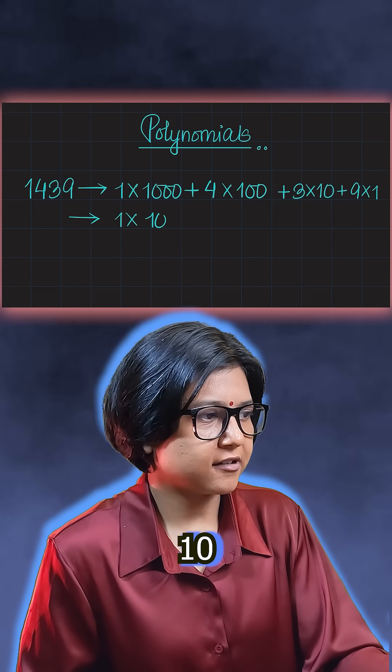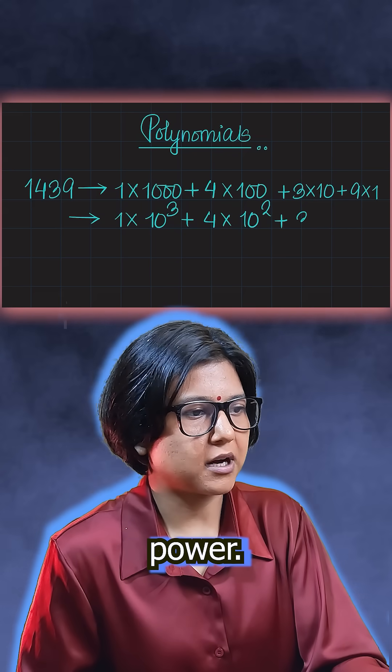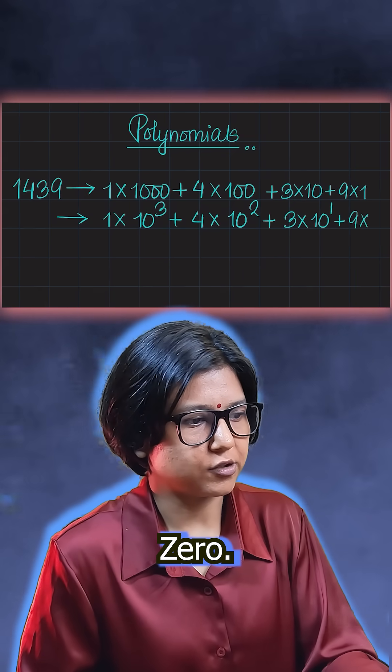Now writing this as a power of 10, 1000 is 10 to the power of 3, 10 squared, 10 as in 10 to the power of 1, and 1 as in 10 to the power of 0.